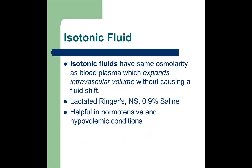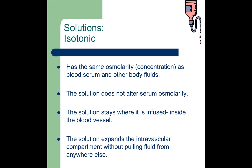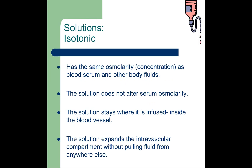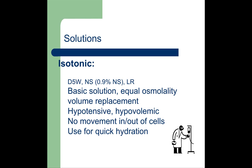Isotonic fluids have the same osmolarity as blood volume and expand the intravascular volume without causing a fluid shift. Examples include normal saline and lactated Ringer's. These are used in normal conditions or if someone is hypovolemic — such as right after surgery — to help boost their volume and maintain homeostasis. Isotonic solutions expand the intravascular compartment without pulling fluid from anywhere else, keeping everything at status quo.